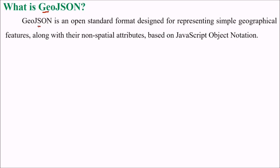What is GeoJSON? Geo relates to earth. GeoJSON, which stands for JavaScript Object Notation, is an open standard format designed for representing simple geographical features along with their non-spatial attributes, based on JavaScript Object Notation.